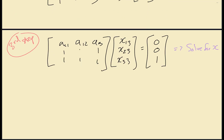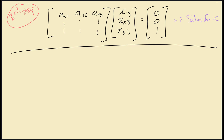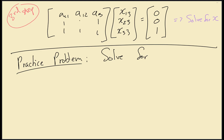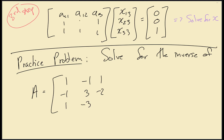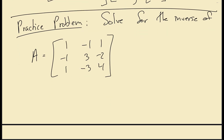Let's do a practice problem. We're going to solve for the inverse of the following coefficient matrix A: [1, -1, 1; -1, 3, -2; 1, -3, 4]. This is exactly the same coefficient matrix we had in the last lecture, so we can directly write down what the L lower triangular matrix is.